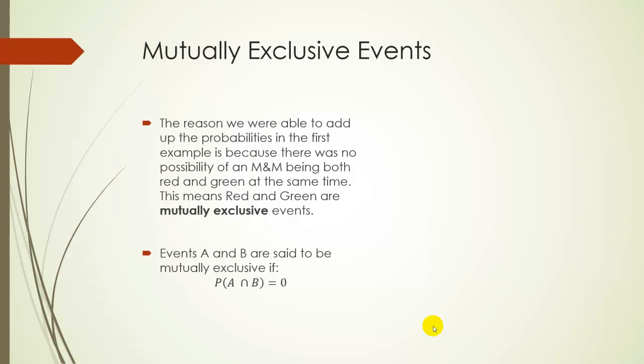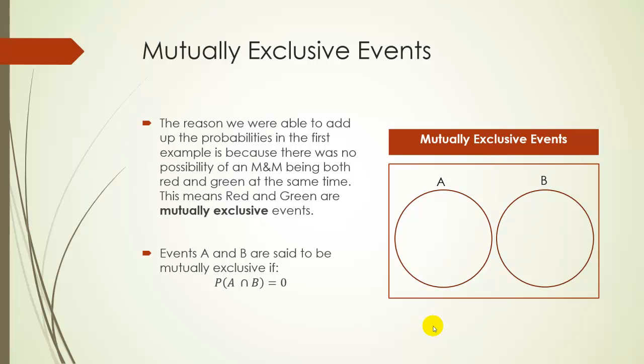So if events are mutually exclusive, what that means is that the probability of A and B is going to be zero. There are no people that are both A and B. There are no M&Ms that are both red and green at the same time. So just diagram wise, what we're saying is A and B are completely separate. They're separate circles. There's no overlap.